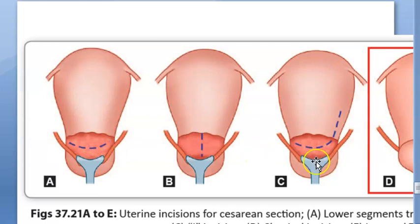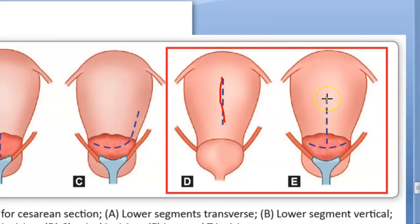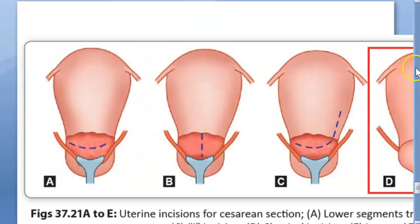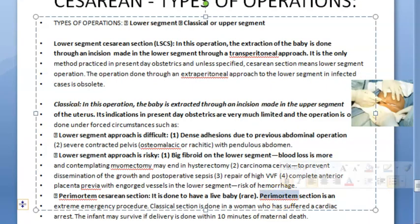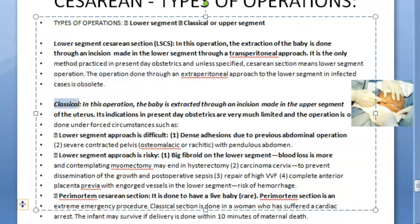The other type is called classical cesarean, where the incision is made on the upper segment of the uterus. Classical is not done anymore — it is only done when the lower segment cannot be approached, when there are adhesions, or in perimortem situations where the mother is dying or has died and they need to remove the baby.